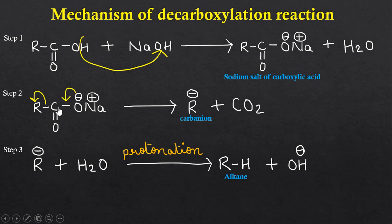In the next step, this negatively charged oxygen atom donates its electrons between the carbon and oxygen bond. The bond between the alkyl group and carbon breaks, and we get a carbanion.